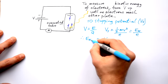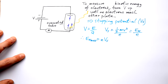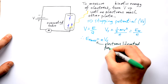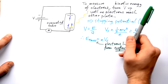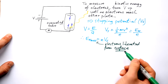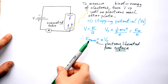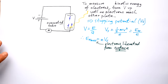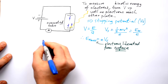We use EK max here because we're only concerned about electrons liberated right from the surface of the metal. Electrons can also come from one or two layers deeper, but surface electrons have the maximum possible kinetic energy. That's how we measure EK max.